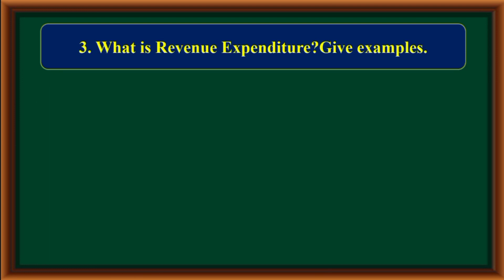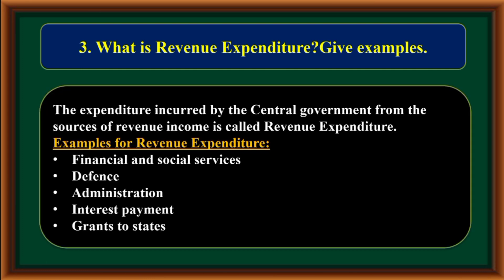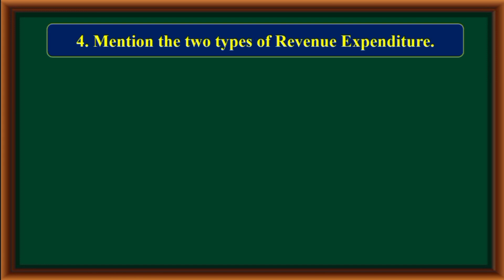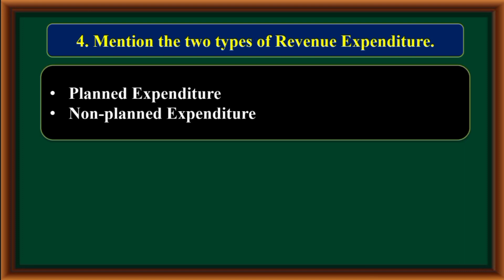What is revenue expenditure? Give examples. The expenditure incurred by the central government from the sources of revenue income is called revenue expenditure. Examples: financial and social services, defense administration, interest payment, grants to states. The two types of revenue expenditure are planned expenditure and non-planned expenditure.